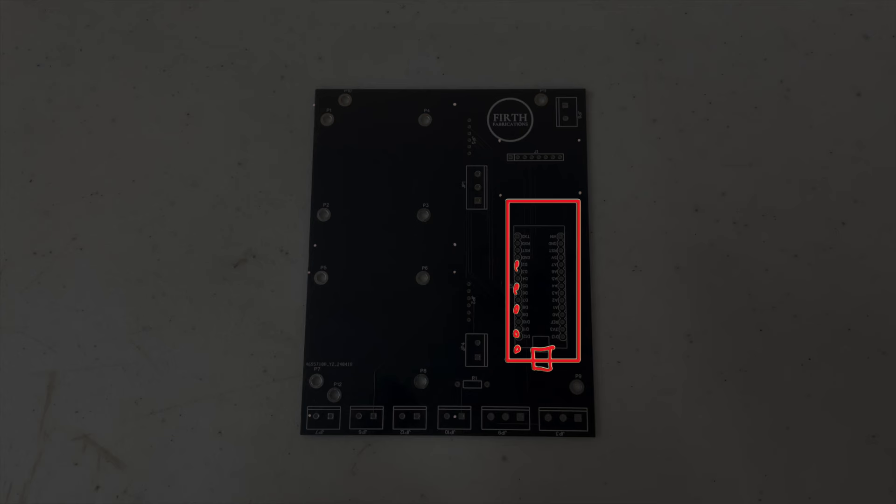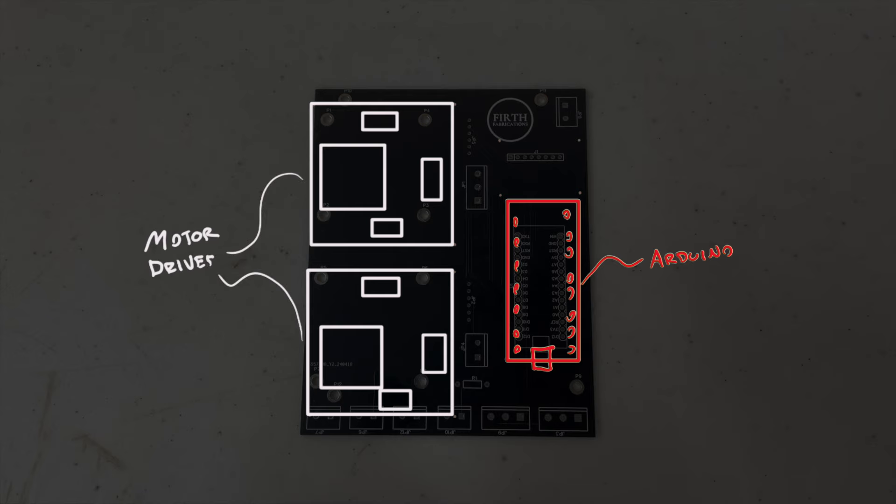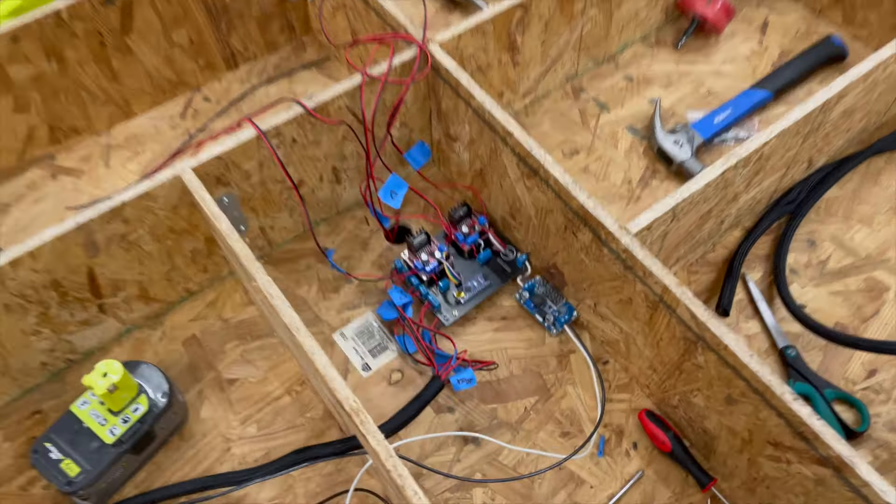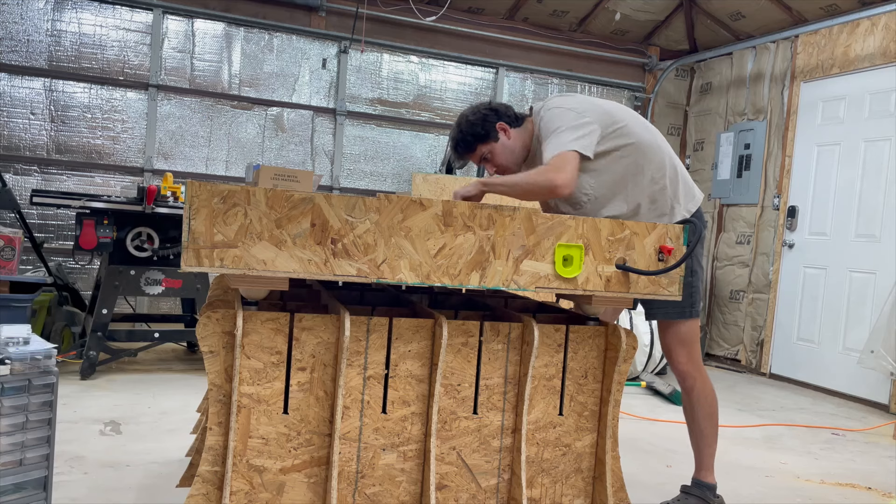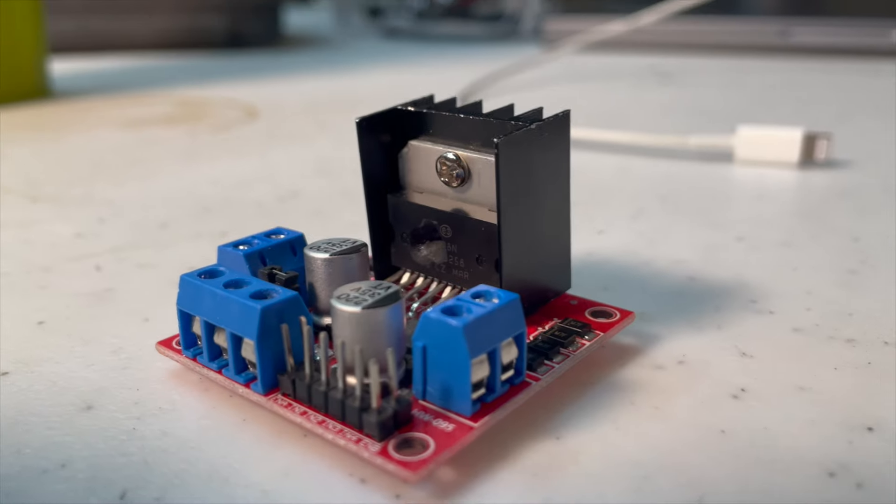I have an Arduino Nano that acts as the brains of the operation, two motor drivers that can supply power to two linear actuators each via Ryobi tool battery, and an Inertia Measurement Unit, or IMU, that'll measure our orientation in space. I thought because I'd used all these components before that this would be a piece of cake, but I ended up really struggling here and exploded a few more motor drivers than I'd like to admit.